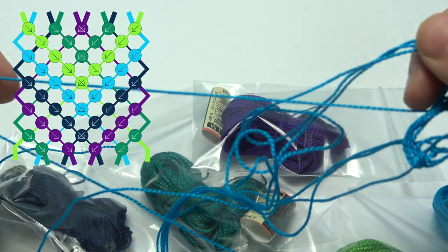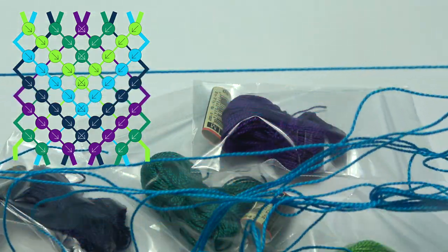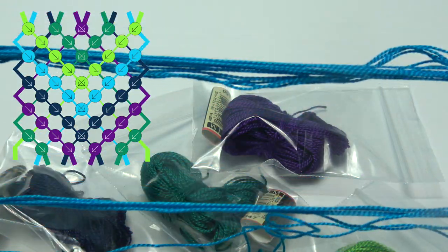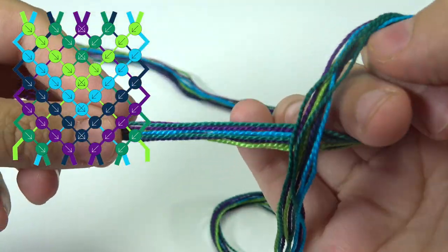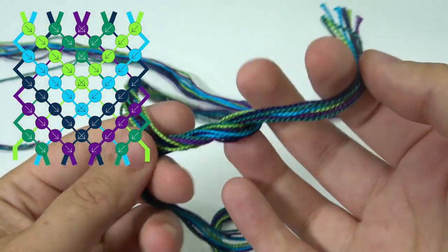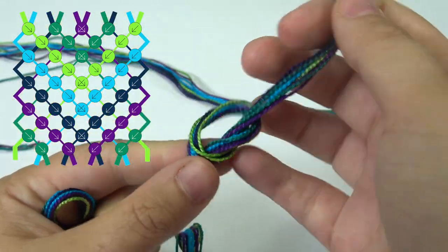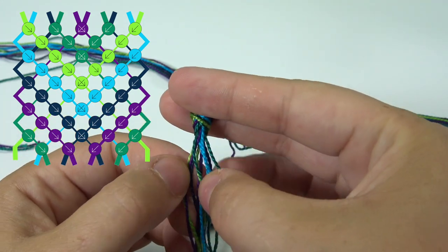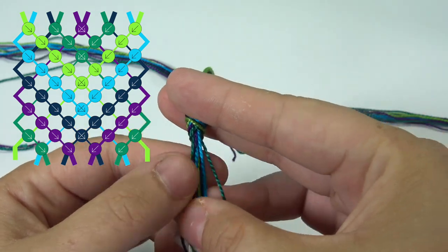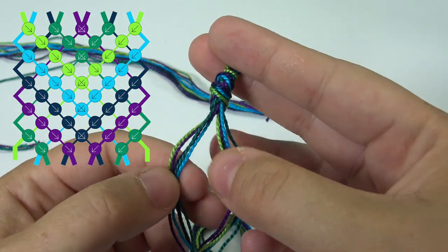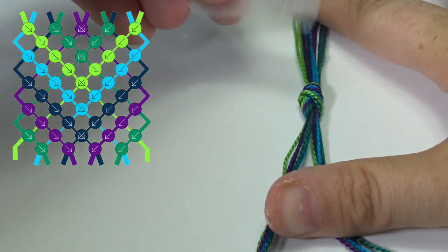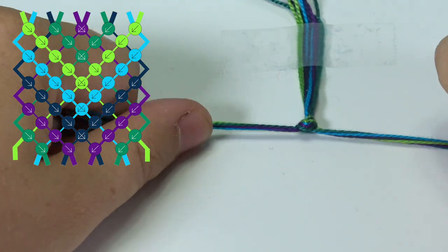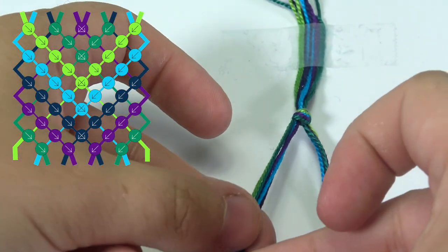Stretch that string out all the way and that way you have their arm's length of how much string you need. Now we're going to make a knot leaving about three inches on the other side. It's going to be a loose knot because we have to first divide our strings evenly on both sides.